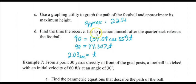The last part of that question says find the time the receiver has to position himself after the quarterback releases the football. We can use one of those equations because we have the T in the equations. I'm going to use that 90 feet down the field. With 54.09 as my V naught, cosine 35T, I can plug that in my calculator and divide both sides. 90 divided by 44.307 gives me about 2.03 seconds, which kind of makes sense because we knew at 3 seconds it had already landed.